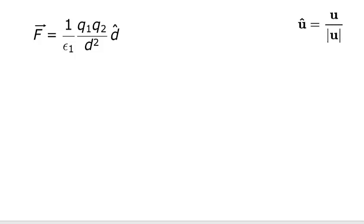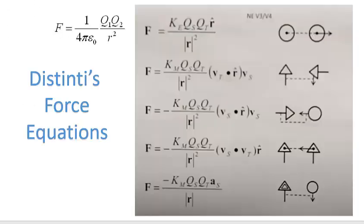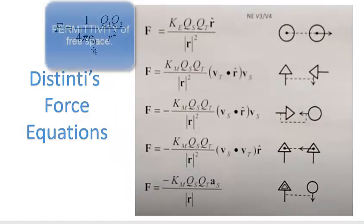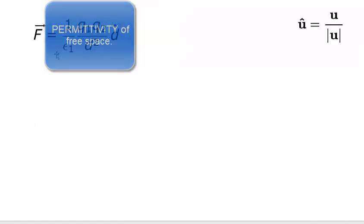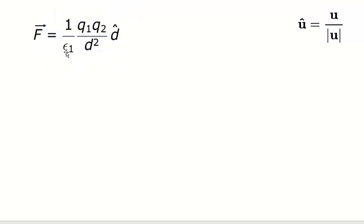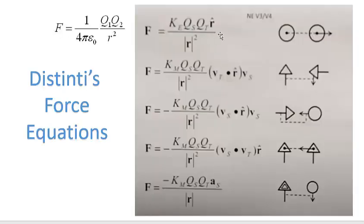In the previous video, I started with Coulomb's Law, which Robert Distinti has here. This is basically Coulomb's Law. This is Coulomb's constant, which he calls Ke — the electric constant. Km he calls the magnetic constant. The electric constant is 1 over 4 pi times the permittivity of free space, which I fold into this epsilon term. So this is Coulomb's constant, charge 1, charge 2 over some distance squared.